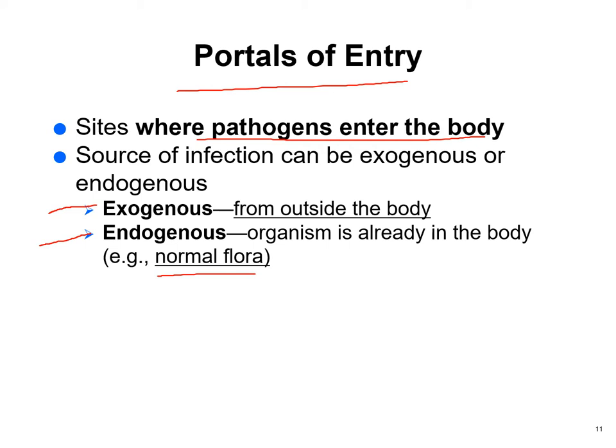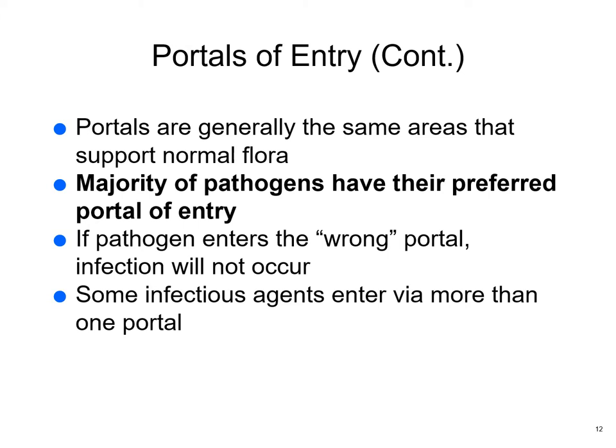Portals of entry are generally the same areas that support normal flora. Most pathogens have their preferred portal of entry — a bad cold prefers to infect your nose; you're not going to get a cold on your big toe. If a pathogen hits the wrong portal, it won't cause a problem. Some infectious agents can enter through more than one portal — the conjunctiva, nose, and mouth may all be possible portals for a particular organism.